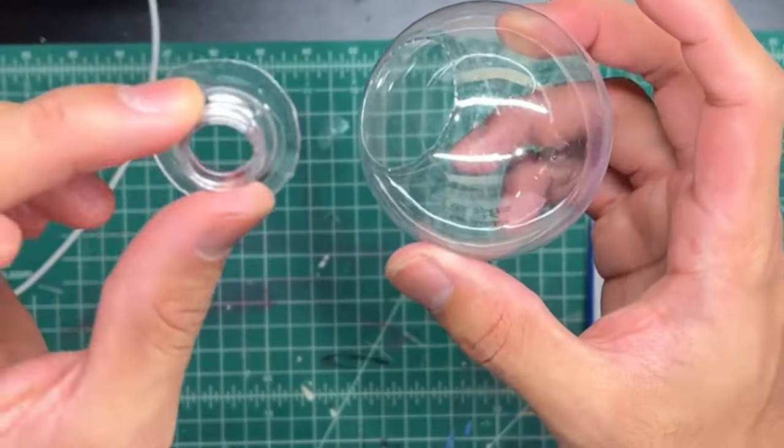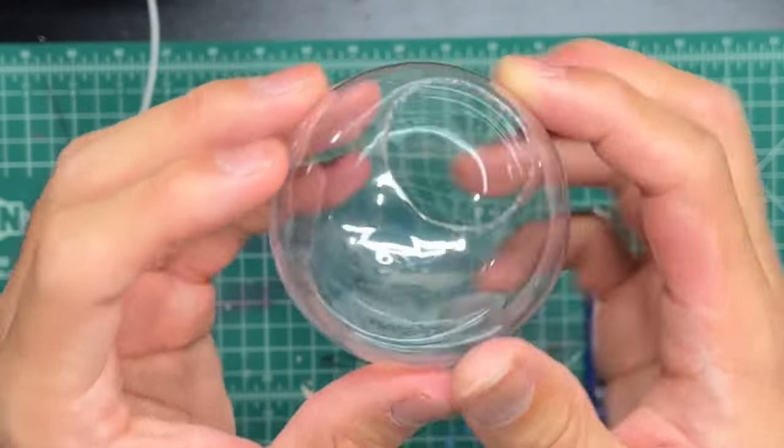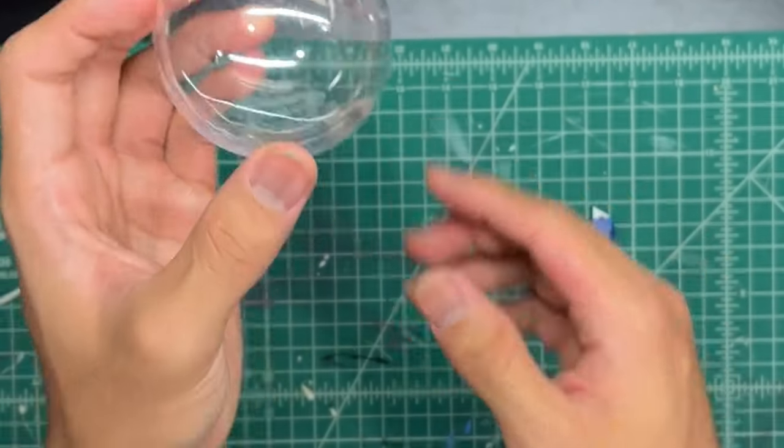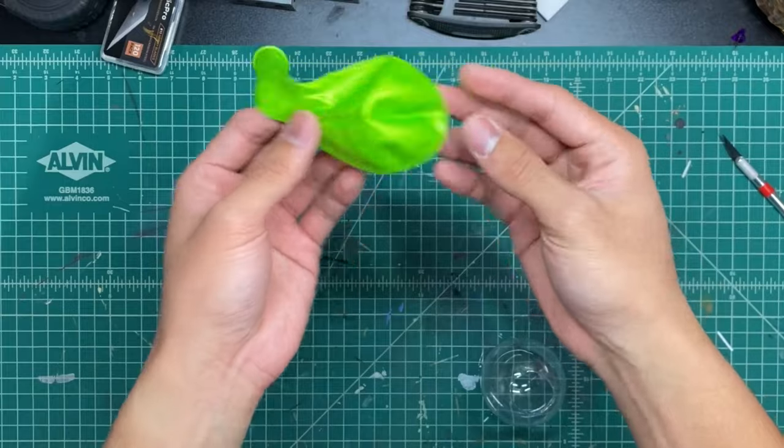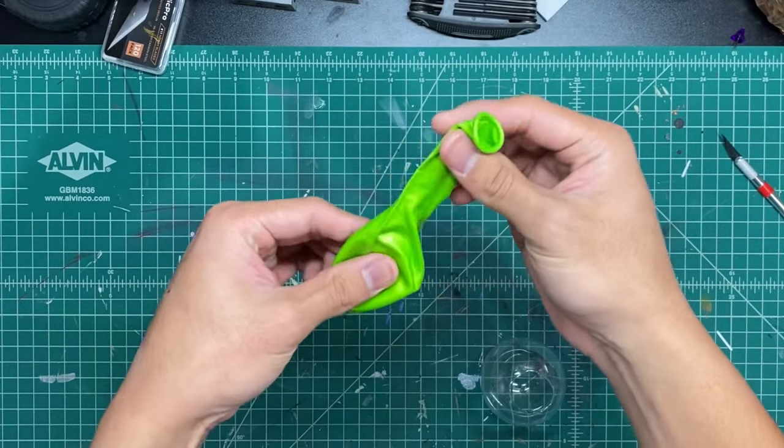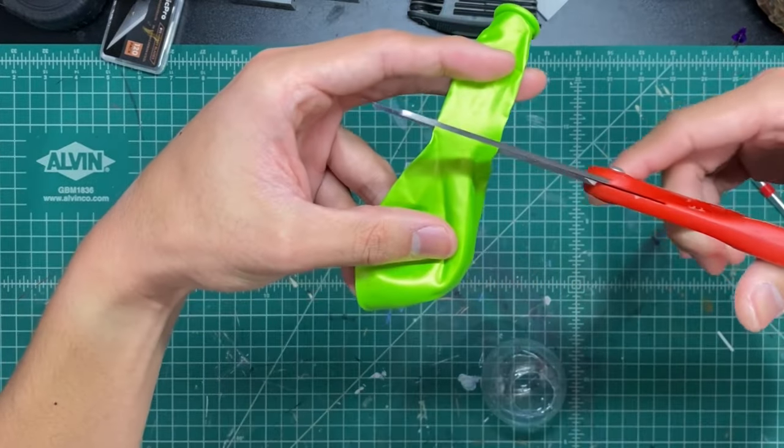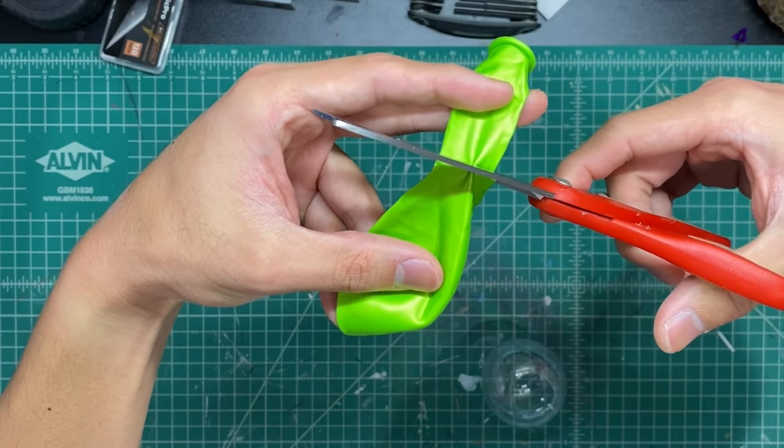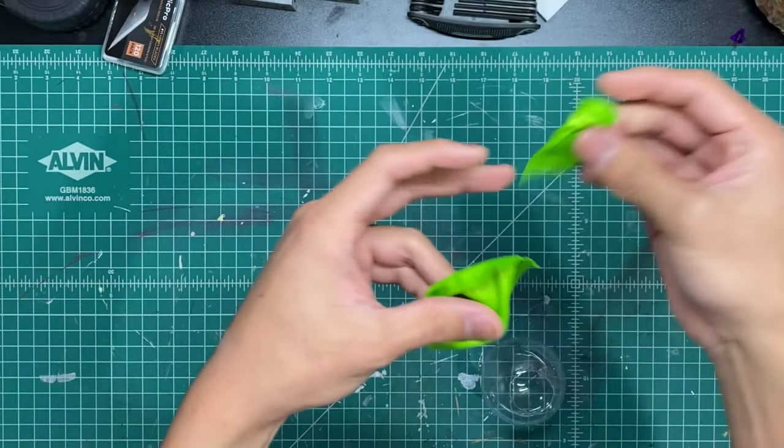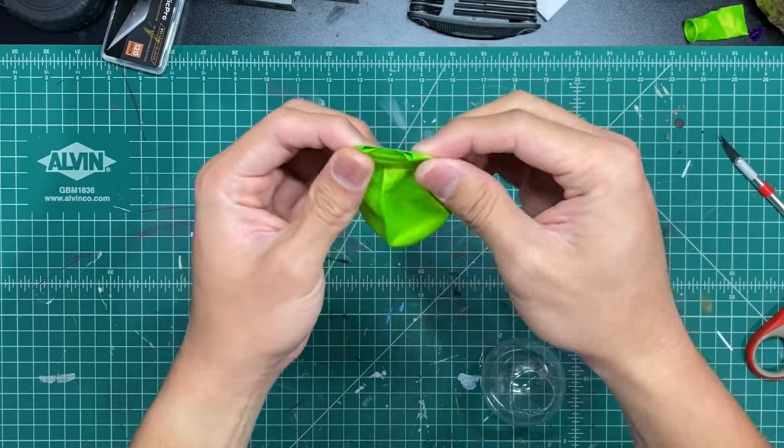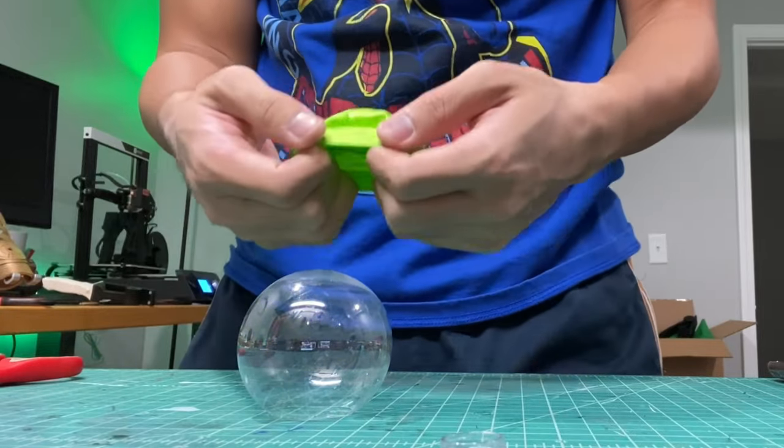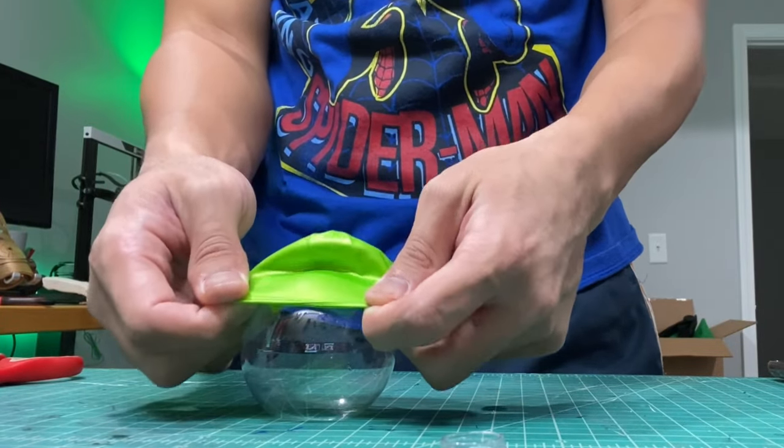As you can see, you have a hole here about, I'd say, one inch in diameter. Now what we're going to do to cover it in green is take a balloon—I know it sounds silly—and we're going to cut off that neck right there, open that up, and kind of just wrap it around that clear ornament just like this.